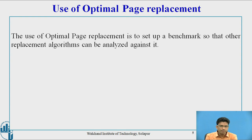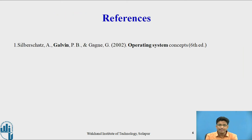The use of optimal page replacement is to set a benchmark so that other page replacement algorithms can analyze and compare against it. This concept is drawn from the textbook Operating System Concepts by Galvin.